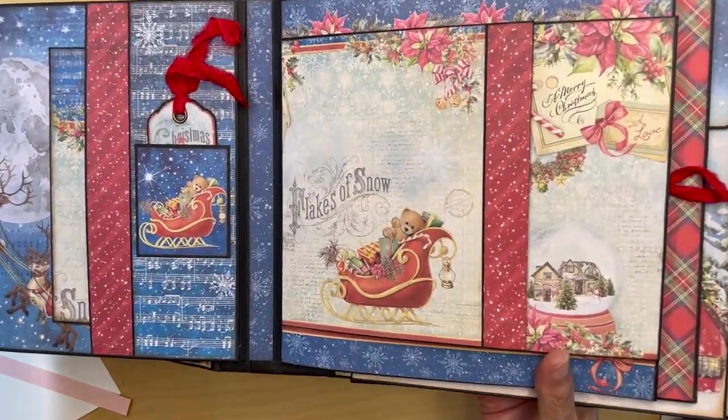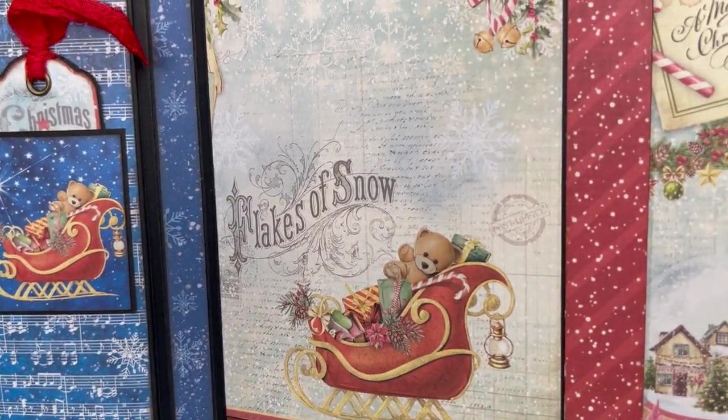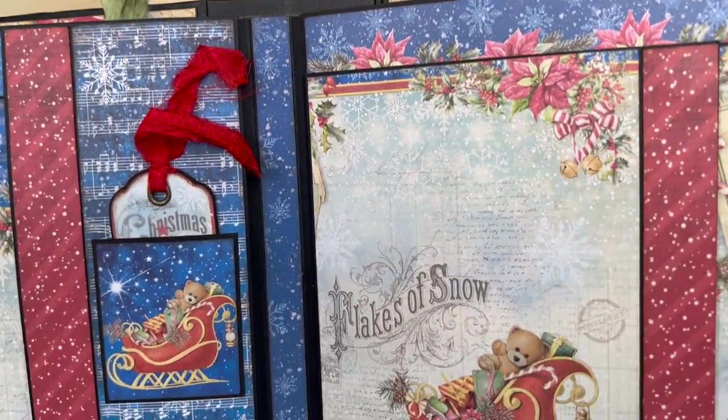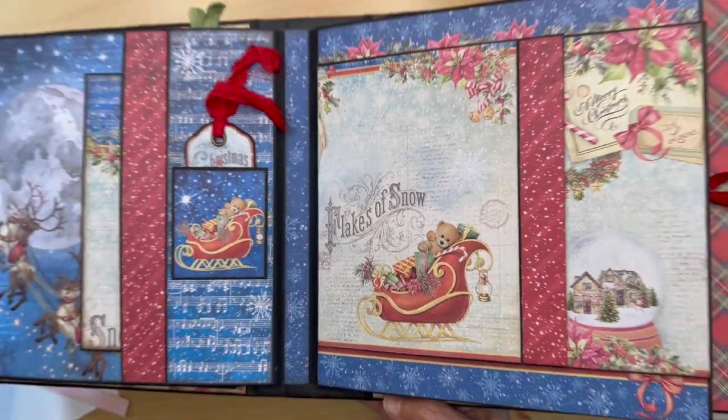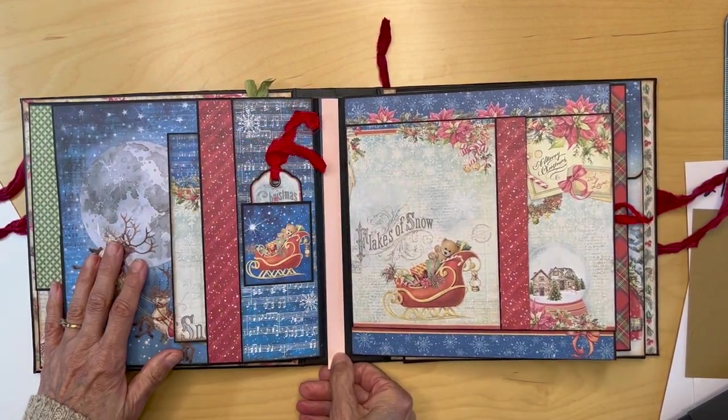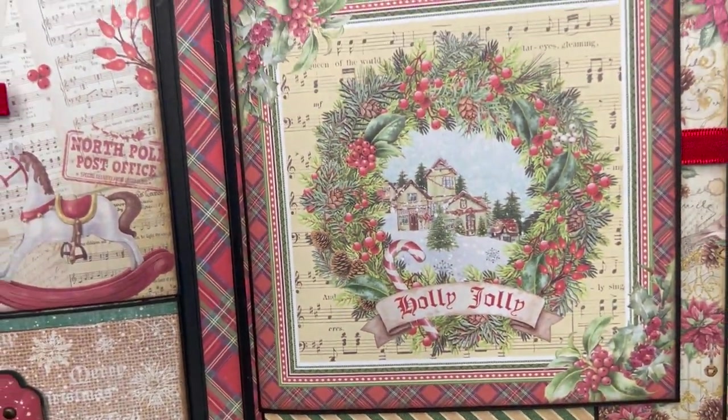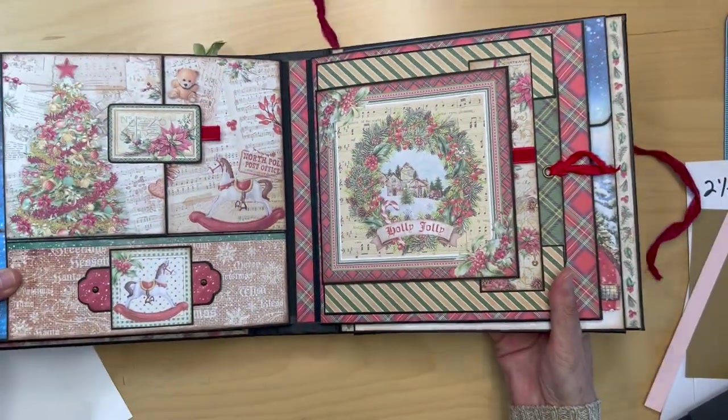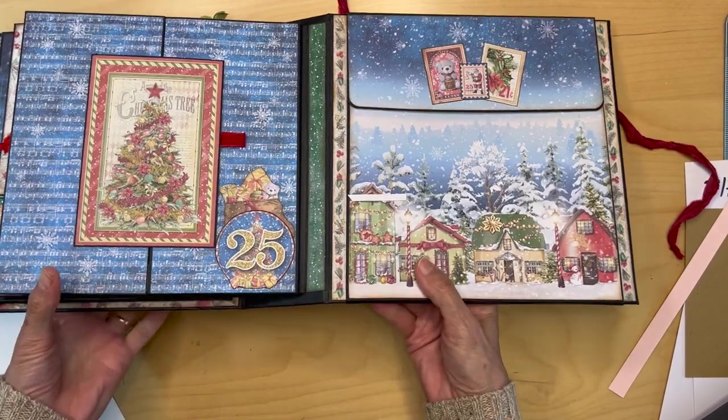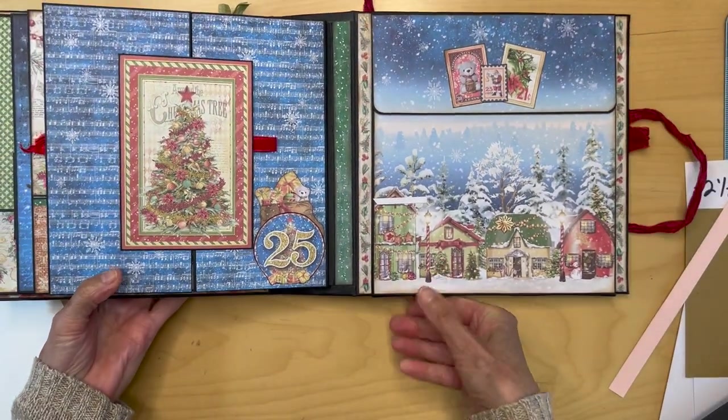For this one, I had a scrap of the blue snowflake. I have no idea where I got it. I was just going through my cutoffs and my little scraps. So that was the half an inch strip that's put in between these two pages. For this one, it was the plaid, the red plaid. So that was the half inch strip put between these two pages. And here it was the green paper. I had a little strip of the green paper and I put that in.